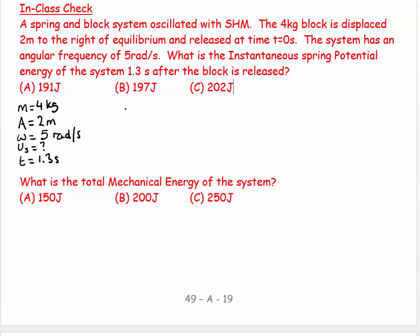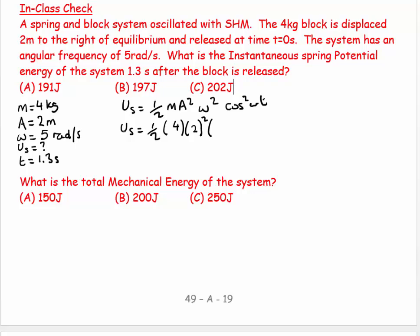The spring potential energy is US = one-half m·A²·ω²·cos²(ωt). We use cosine squared because the block is released from maximum displacement at t = 0. Plugging in: m = 4, A = 2, ω = 5, and t = 1.3 seconds.